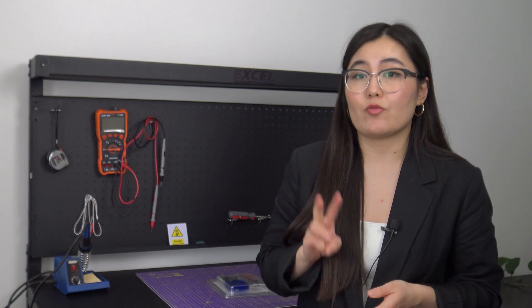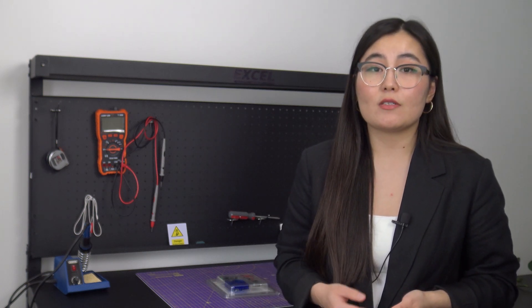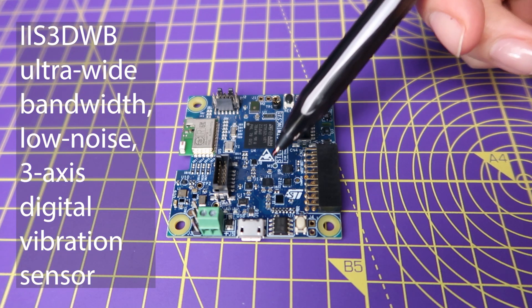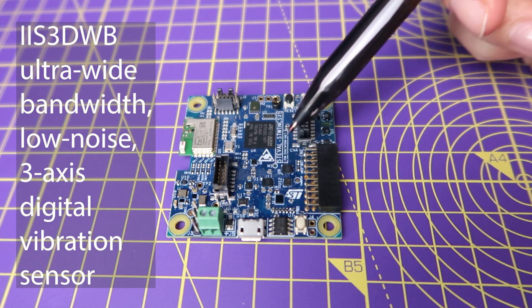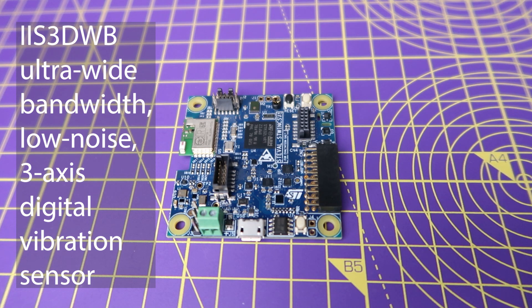As I mentioned, the board features several industrial grade sensors which can be broadly categorized into three groups. The first category covers multiple motion sensors, which includes the new IIS-3DWB ultra-wide bandwidth 3-axis digital vibration sensor.